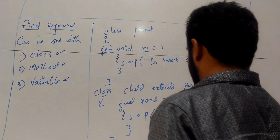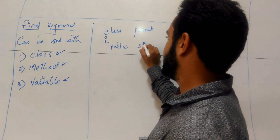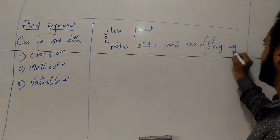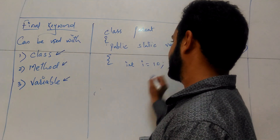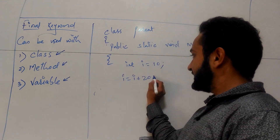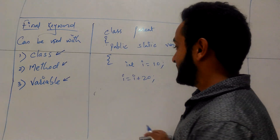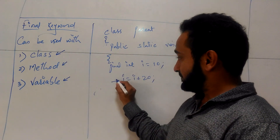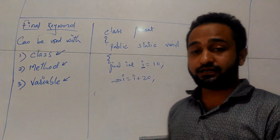Lastly, the final keyword with a variable. Suppose I have a simple class with a public static void main method. I have a variable int i = 10. Without final, I can modify its value — for example, i = i + 20, making the new value of i equal to 30. But if I make the variable i as final, I cannot modify its value. I will get an error saying the variable i is final and cannot be modified. Once a value is assigned to a final variable, it cannot be changed.